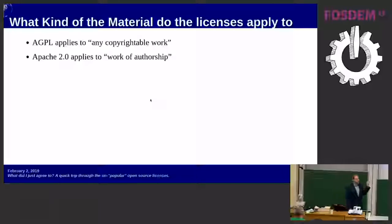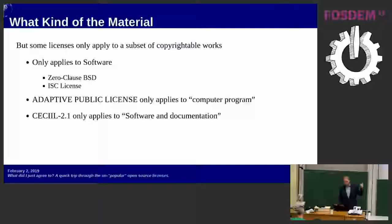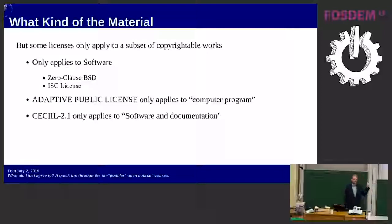The first thing I wanted to point out is what kind of material do these licenses actually apply to? Two popular licenses — the AGPL and Apache 2.0 — aren't surprising: AGPL applies to any copyrightable work, and Apache 2.0 applies to anything that's a work of authorship. Under US law, those are basically synonymous. But other licenses are much narrower — some only apply to software, leaving software undefined. The zero-clause BSD license and the IFC license, for example, can't be applied to anything that isn't software.